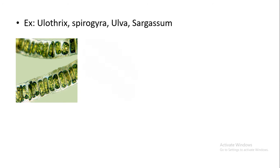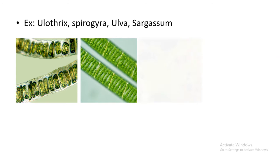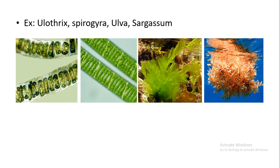In Thallophyta, some examples we talk about are Ulothrix, Spirogyra, Volvox, and even Sargassum.